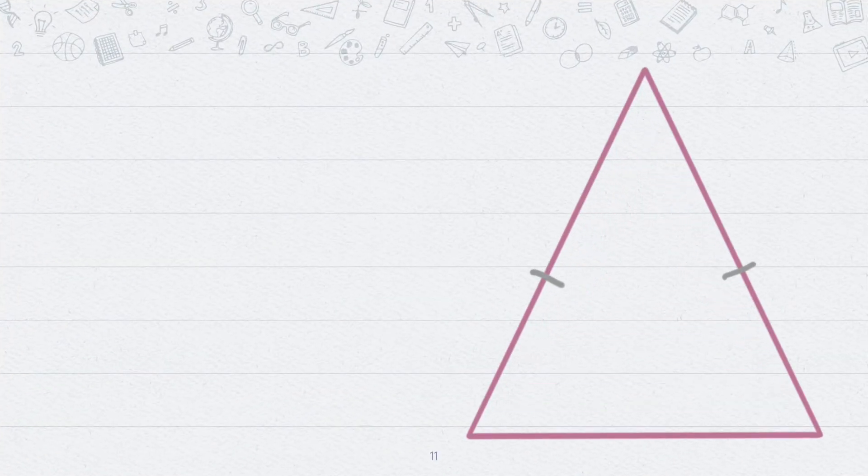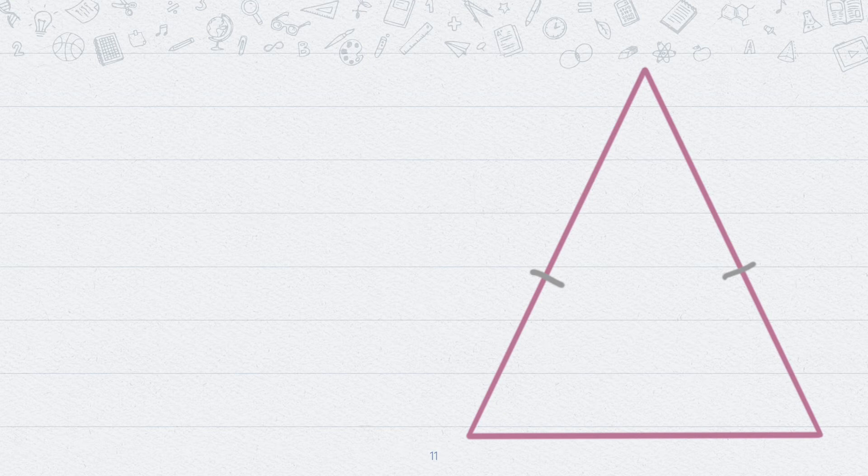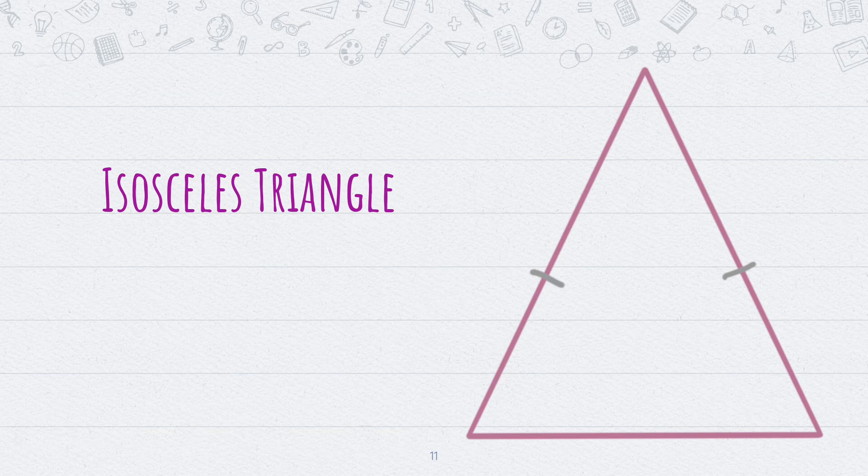Now look at this one. In this triangle, only two sides are equal. Such a triangle is called an isosceles triangle.